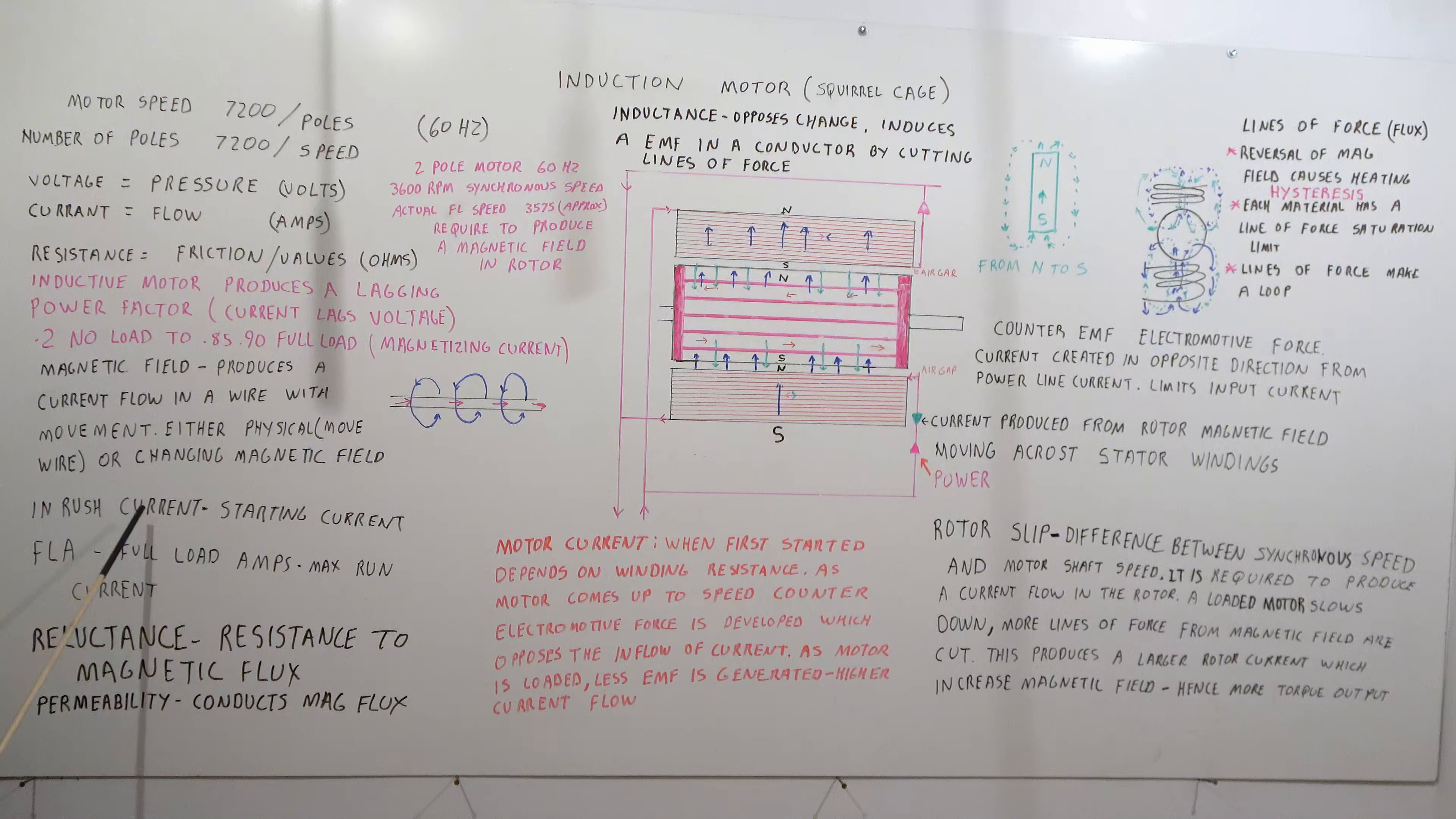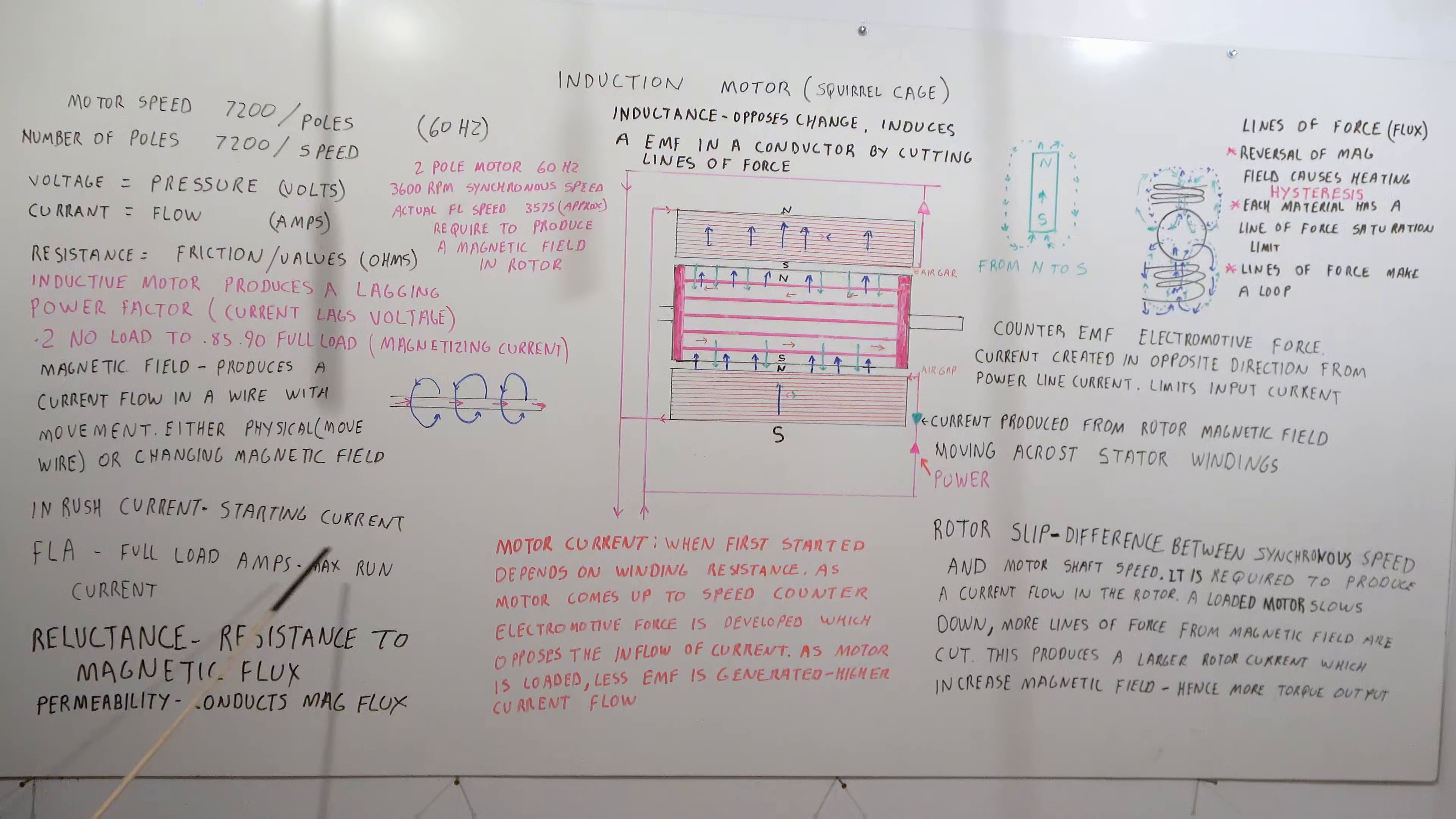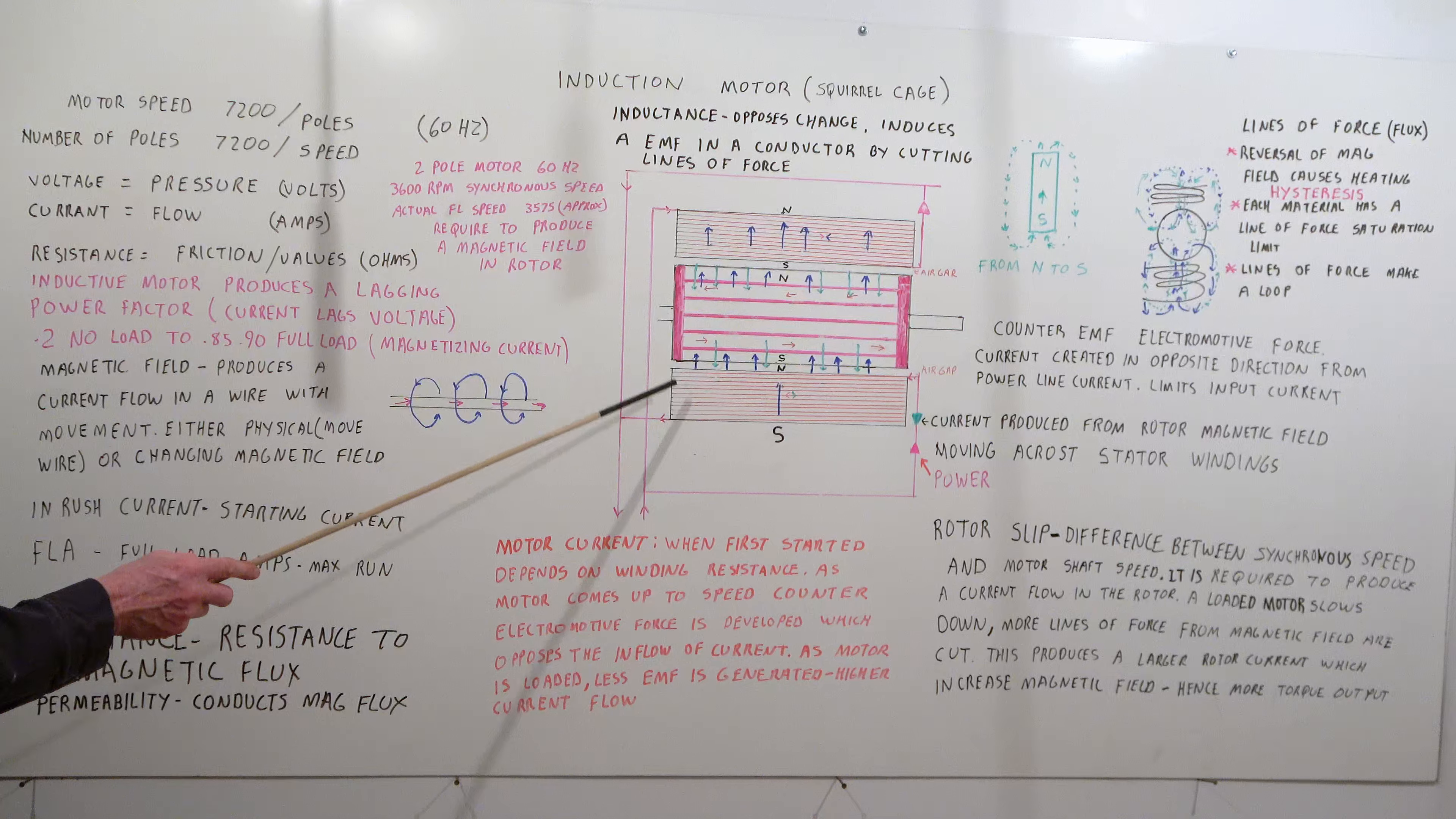The motors you have inrush current, that's the starting current. FLA full load amps, this is the maximum run current from the motor. This is the current at the rated horsepower the motor will pull. You don't want to exceed this as you start producing too much heating. You'll start burning up insulation causing problems in the motor. Break down insulation if it gets too hot, you'll limit the run time on it.